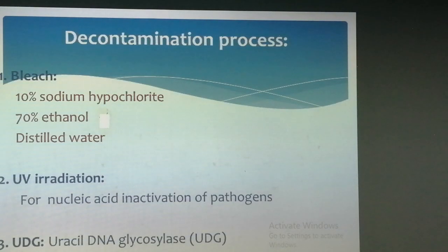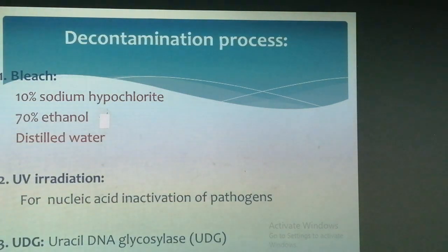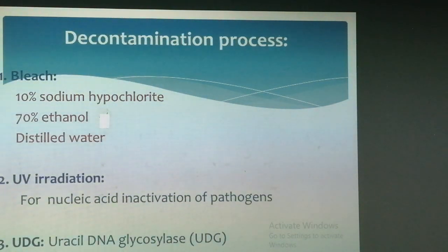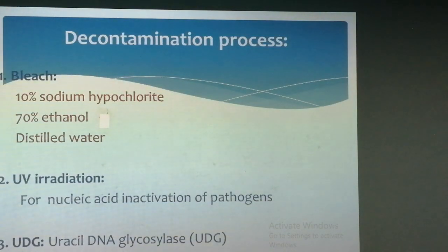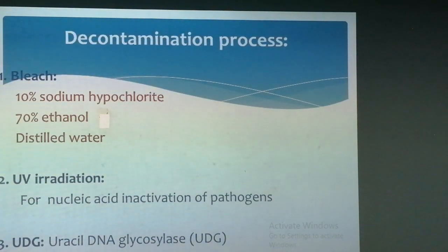For decontamination, the following things should be taken into consideration. Number one: bleach — 10% sodium hypochlorite can be used for surfaces and instruments, followed by removal of bleach with ethanol and water. Alternatively, commercial products validated as DNA-destroying agents can also be used if sodium hypochlorite is not suitable. Number two: UV radiation can be applied — UV rays inactivate the DNA or RNA of pathogens. Number three: enzymatic method — uracil DNA glycosylase is in use; it reduces DNA carryover contamination between PCR experiments by preventing amplification of DNA from previous reactions.